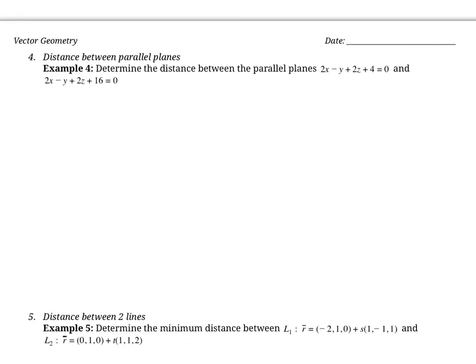The next type is the distance between parallel planes. These two planes are parallel because their normal vectors are both 2, negative 1, 2. They're not the same plane because the d values differ — one is 16 and one is 4. If planes aren't parallel, they always intersect and the distance is 0. For parallel planes, the distance is constant, and the shortest distance makes 90 degrees with each plane.